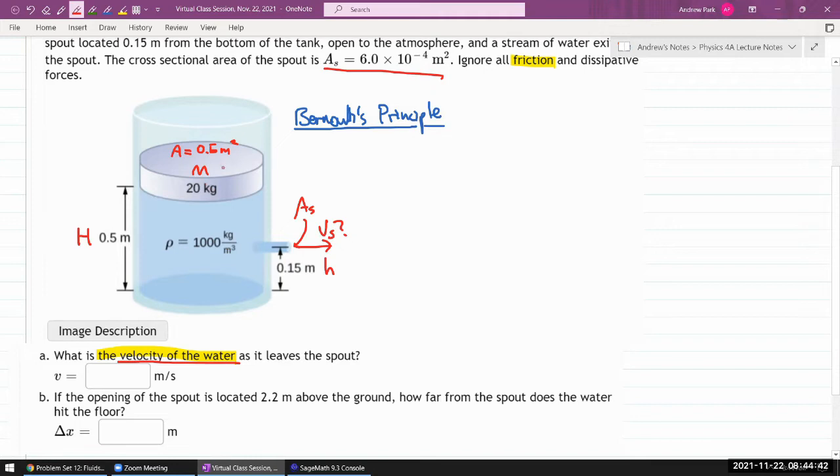So to the extent that the water is viscous, and there's friction, it won't exactly hold. The question says ignore all friction. Because as long as we're ignoring friction, we can just rely on Bernoulli's principle. But this is the sort of thing that you will have to worry about when you do experiments that's designed to test Bernoulli's principle. You have to watch out for the fact that to the extent that viscosity of fluid is significant, there will be an error. Bernoulli's principle won't exactly hold.